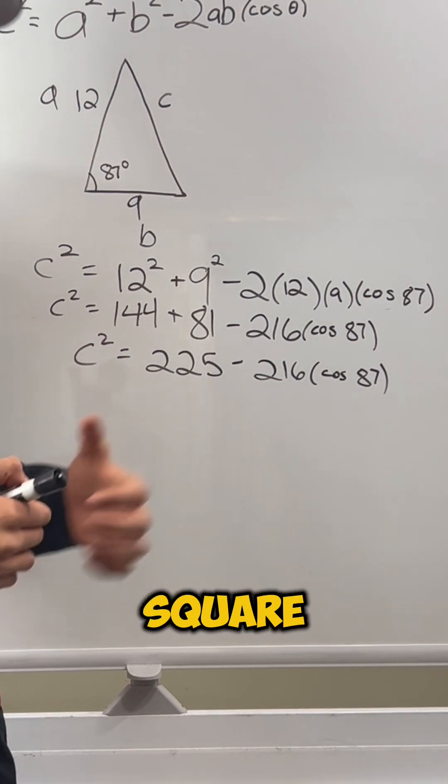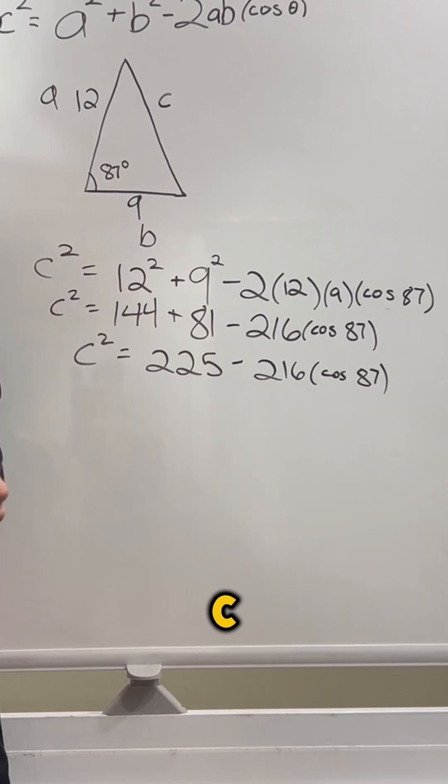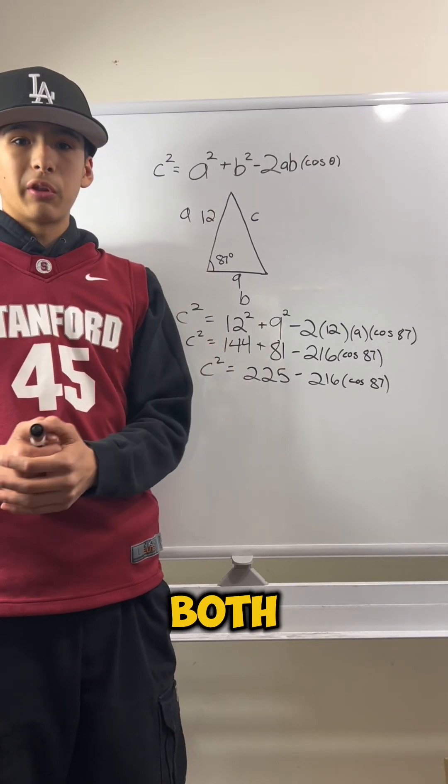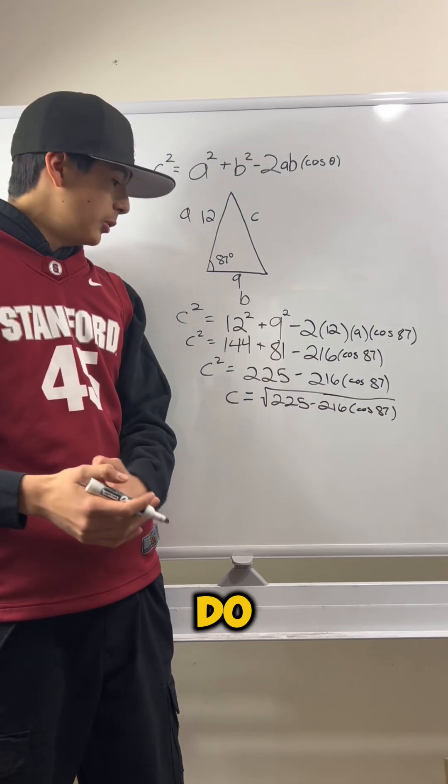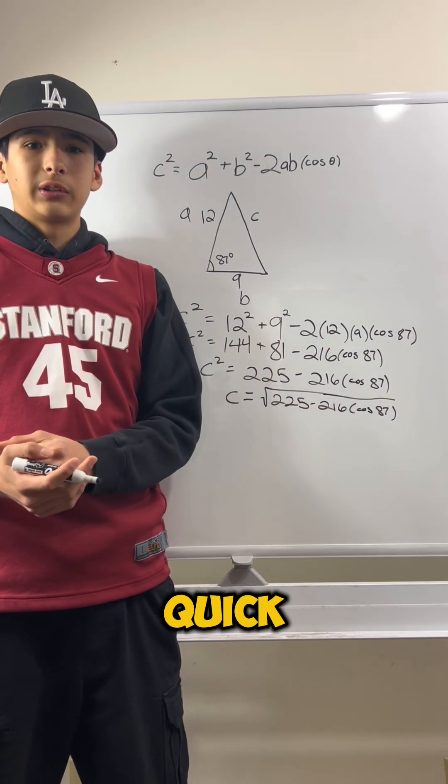Now, to get rid of this square on the C, which is what we're trying to solve for this side C, we have to square root both sides. And now all we have to do is input this into a calculator, which I'm going to go do real quick.